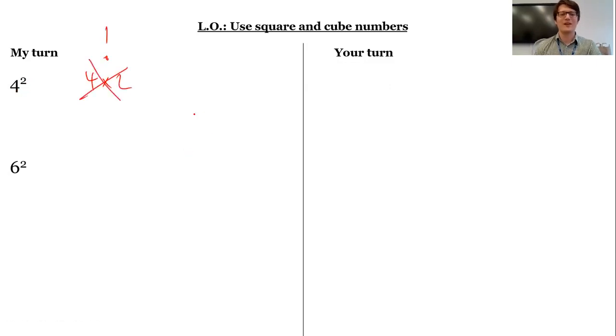Remember that a square number, sometimes people think, oh yeah, that just means four times two. No, no, no. The idea of the square, remember, is if I imagine I've got a square, I know that all of the sides are the same.